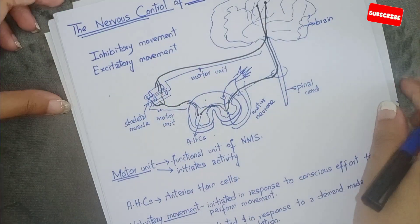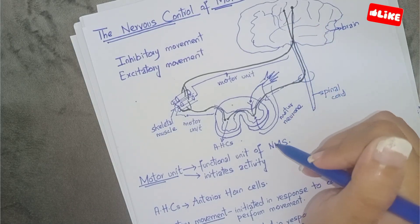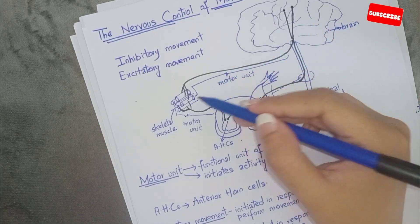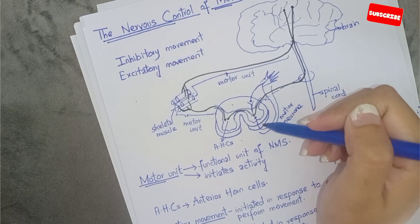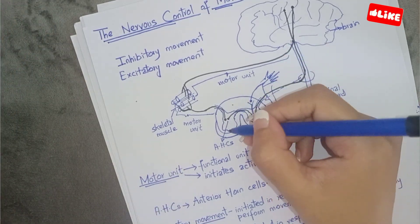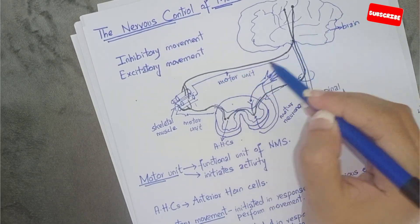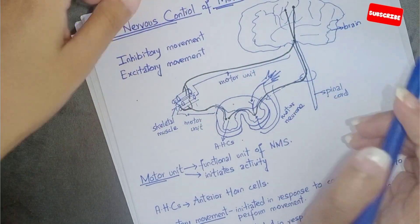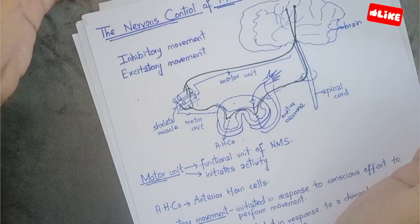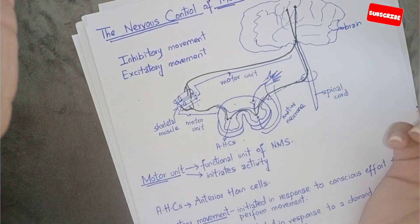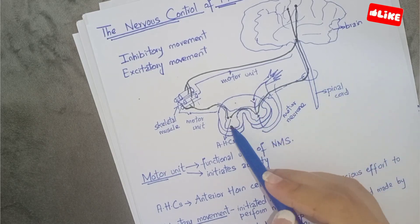Now, the nervous control of movement works like this: when we control movement, signals come from the brain or the spinal cord. They go to the anterior portion of the spinal cord, where there are anterior horn cells. There will be a synapse, and a new neuron will supply the muscle fibers. The motor units are either inhibitory or excitatory — they initiate muscle contraction or inhibit it.